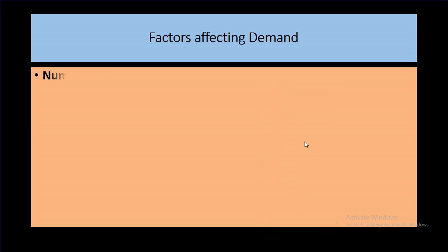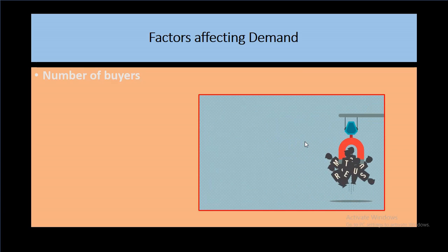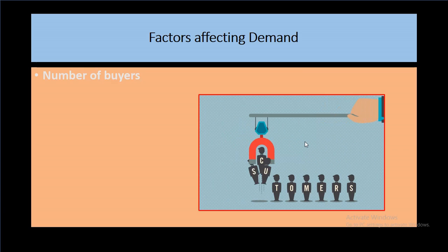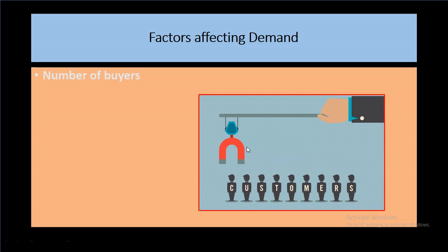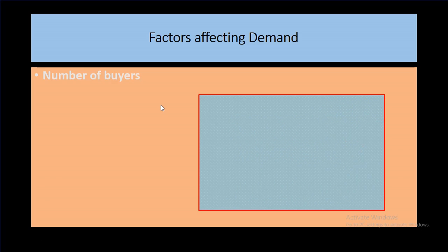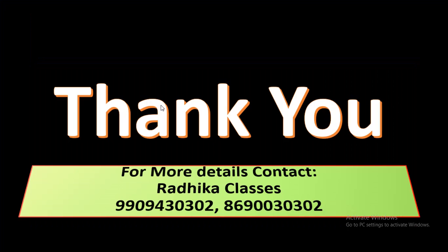The last factor which affects demand is the number of consumers. The price will not change, but demand can suddenly increase or decrease. If the number of consumers in the market is increasing, then the demand for a product also increases. But if the number of consumers in the market decreases, the demand for a product will also decrease, even though the price of the product does not change. These are the factors affecting demand and the meaning of demand covered in this video.